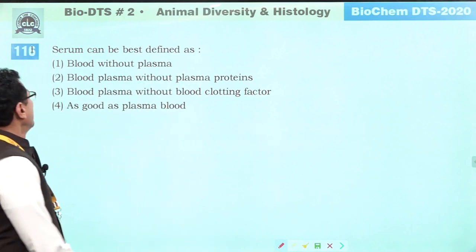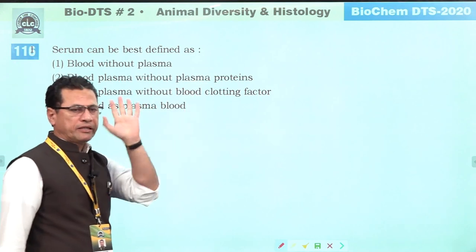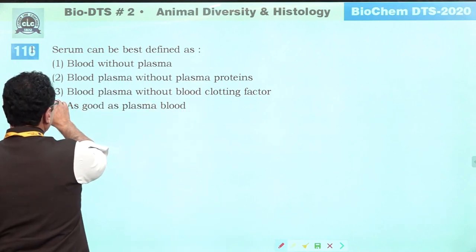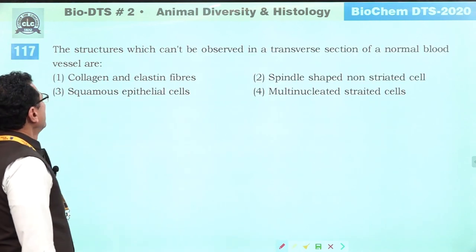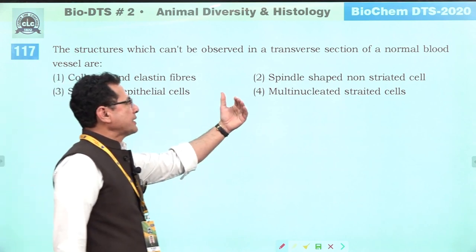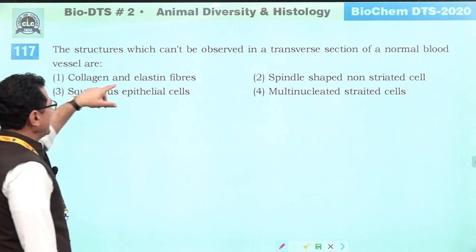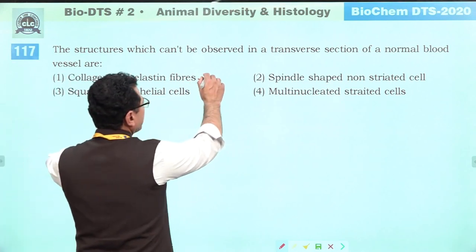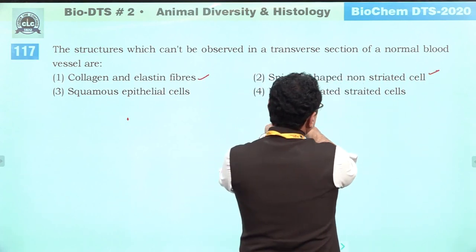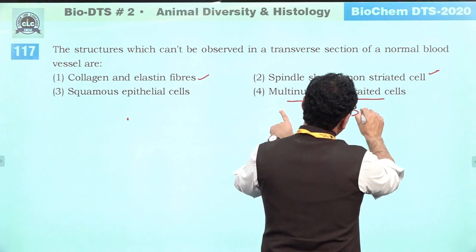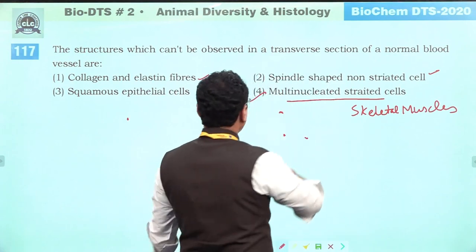Serum is blood plasma without blood clotting factors — this is the simple definition. Answer is third. The structures not observable in a transverse section of a normal blood vessel: collagen and elastin fibers — visible; spindle-shaped non-striated cells (smooth muscle) — visible; multinucleated striated cells are found in skeletal muscle, not in blood vessels. Answer is fourth.